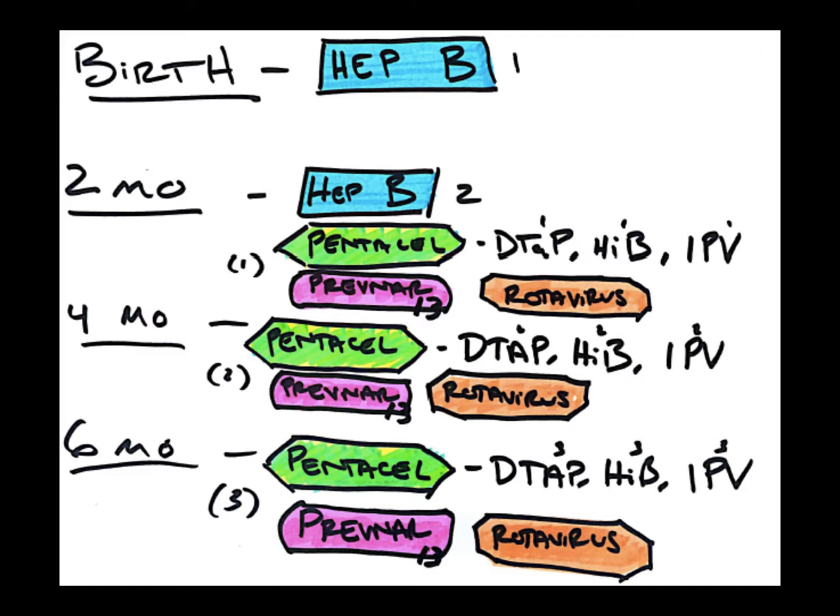Then they get this repeating three vaccine series, the Pentacil, the Prevnar, and the Rotavirus. They get it three times at two, four, and six months.